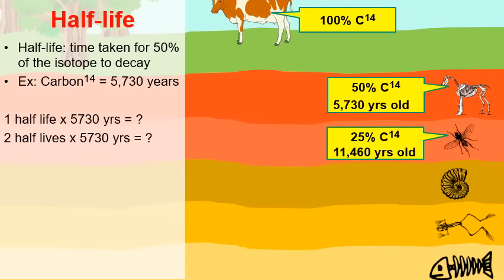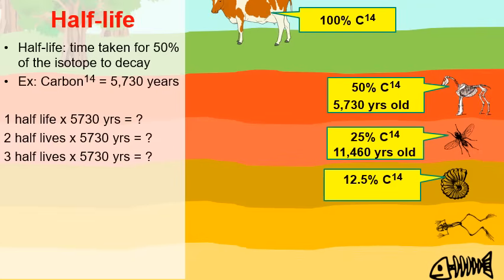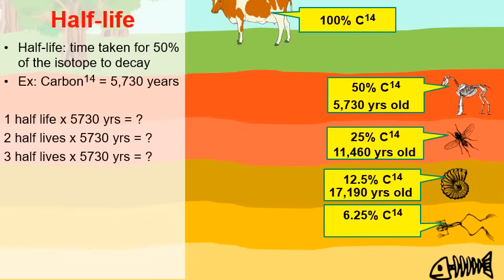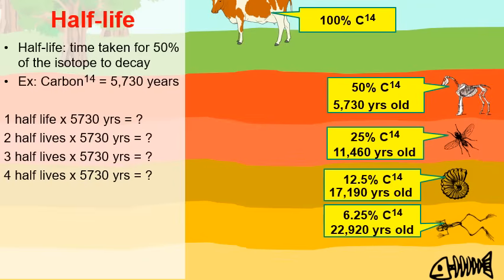A third fossil found with 12.5% of its carbon-14 remaining means three half-lives have passed — 12.5 is half of 25, 25 is half of 50, and 50 is half of 100 — placing this fossil at about 17,190 years old. A fourth fossil with 6.25% of its carbon-14 remaining means four half-lives have passed, since 6.25 is half of 12.5, and so on, giving an estimated age of about 22,920 years old.